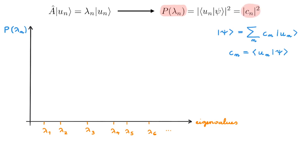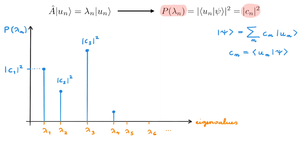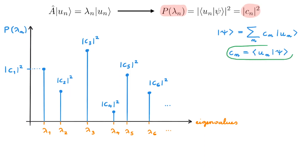If we now place the probability of getting a particular eigenvalue on the vertical axis, then postulate 4 tells us that at each eigenvalue we have a particular height given by the absolute value squared of the C coefficients. For example, for λ1 we get a height of |c1|², and similarly for the rest of the eigenvalues. In a real situation we would get these values from the state ψ using this bracket. This diagram is showing what we call a probability distribution.